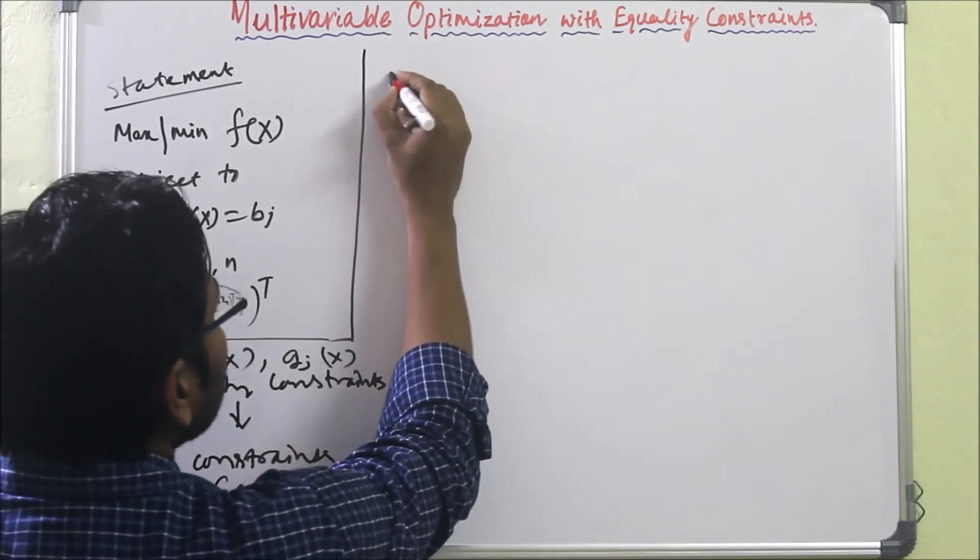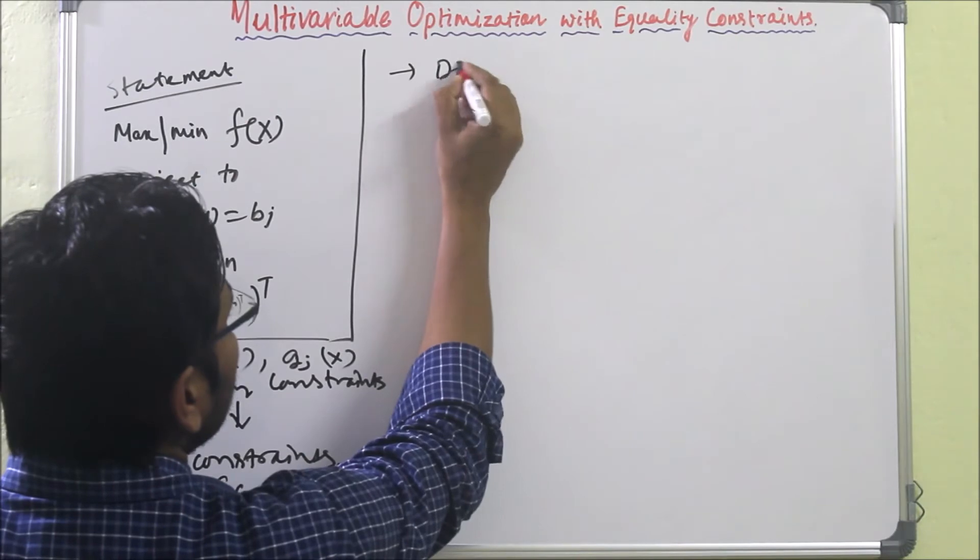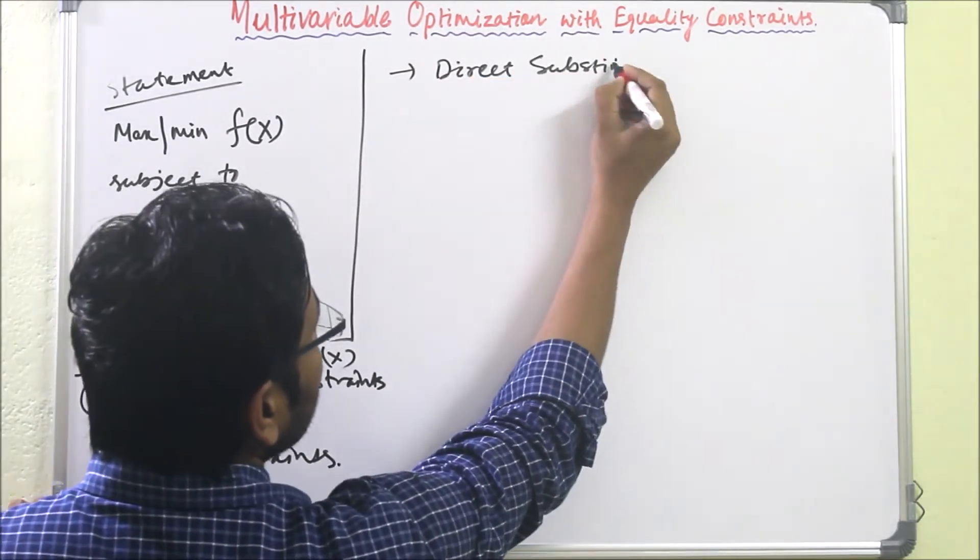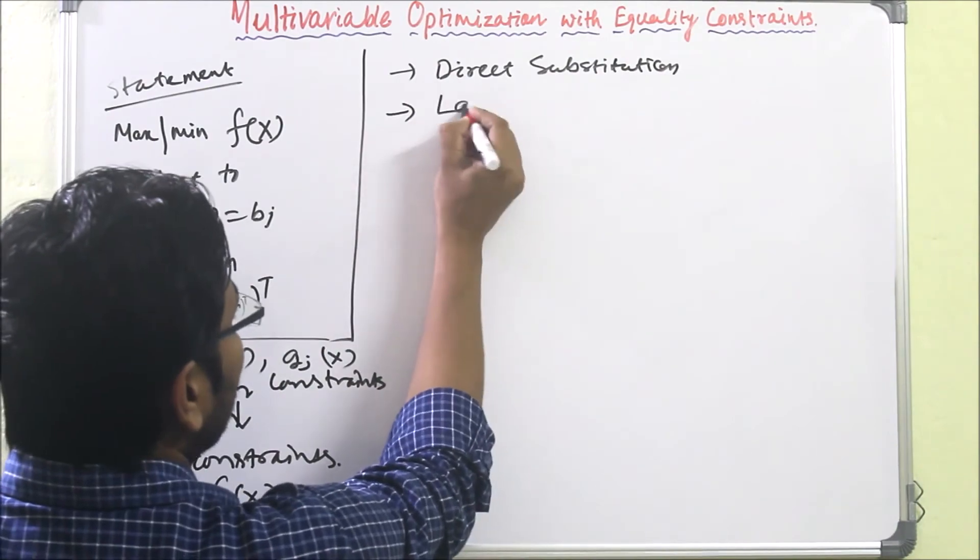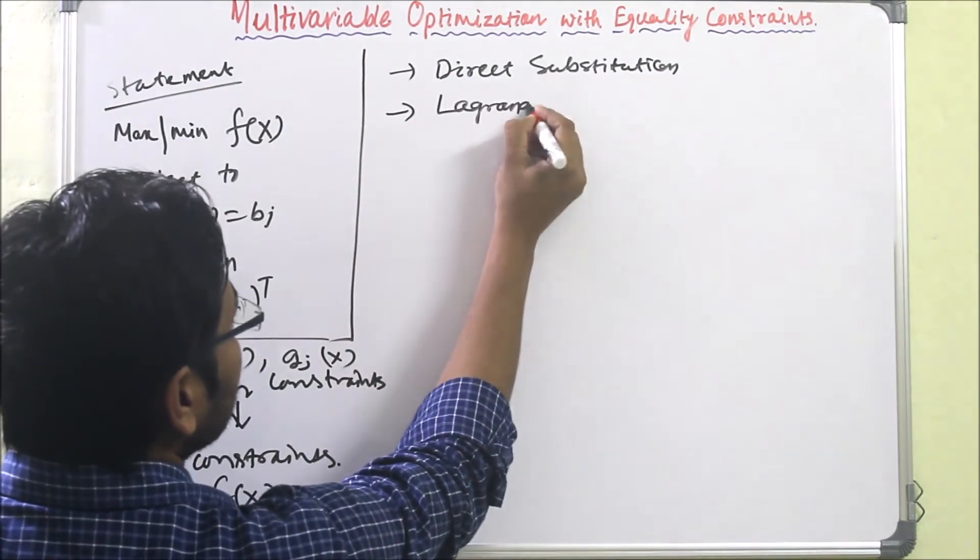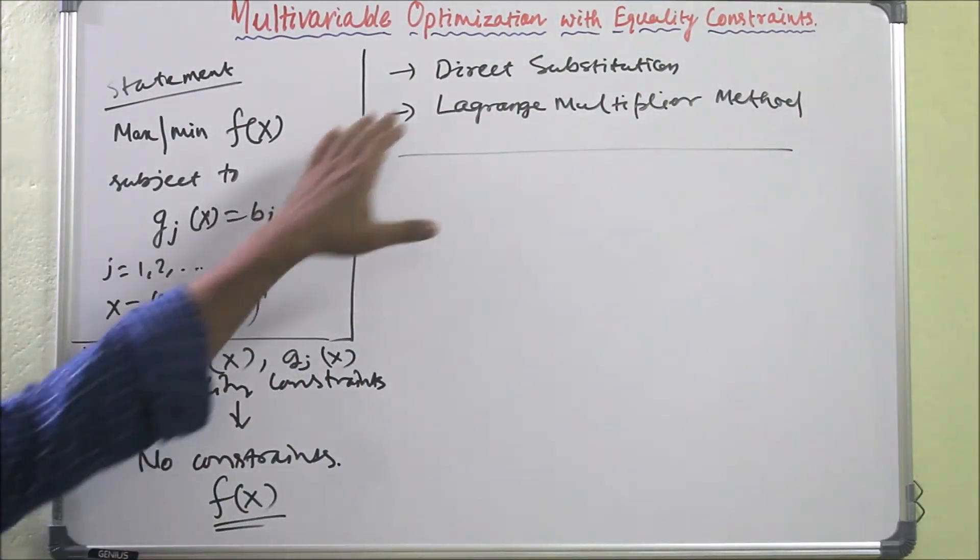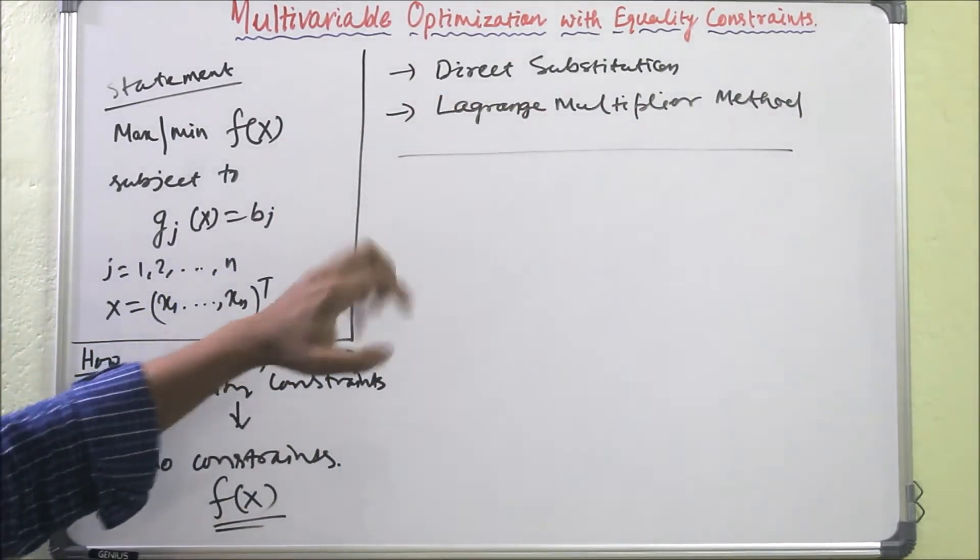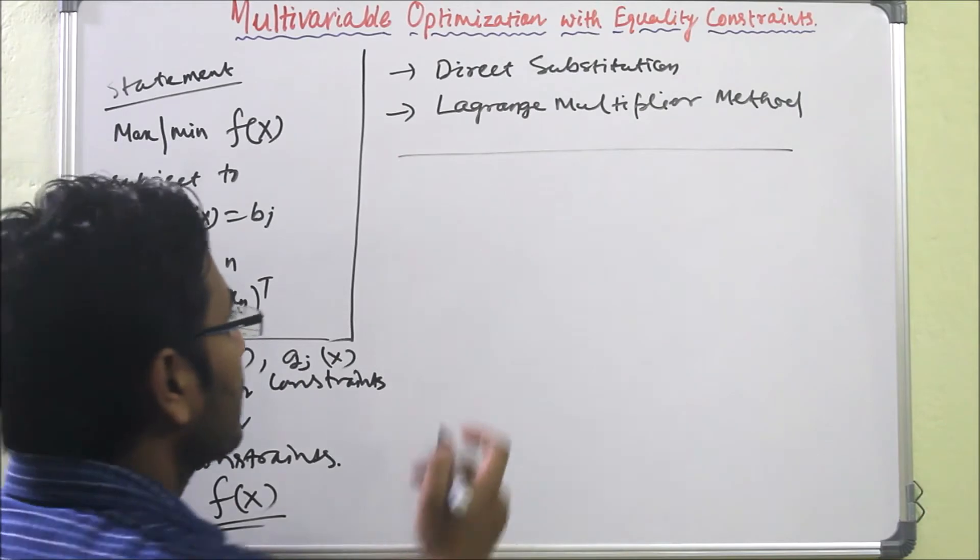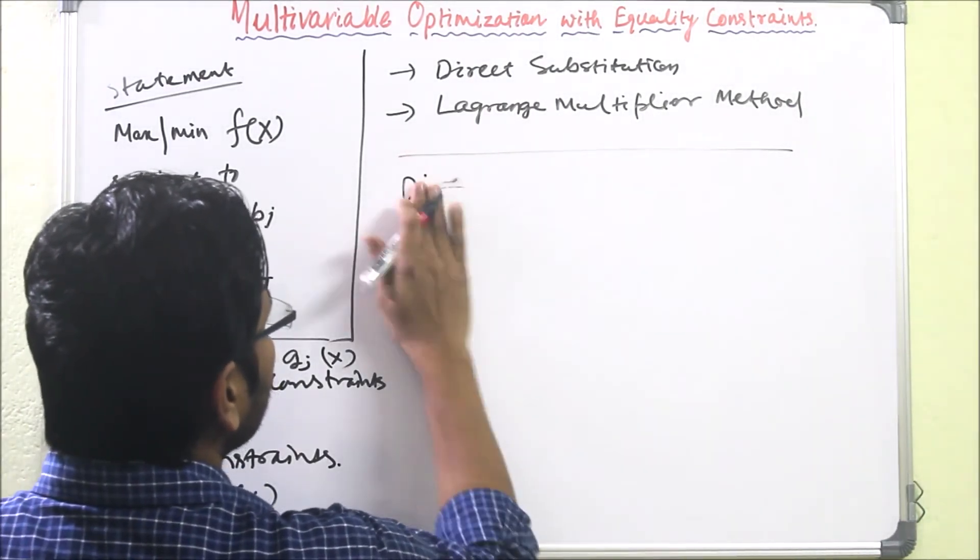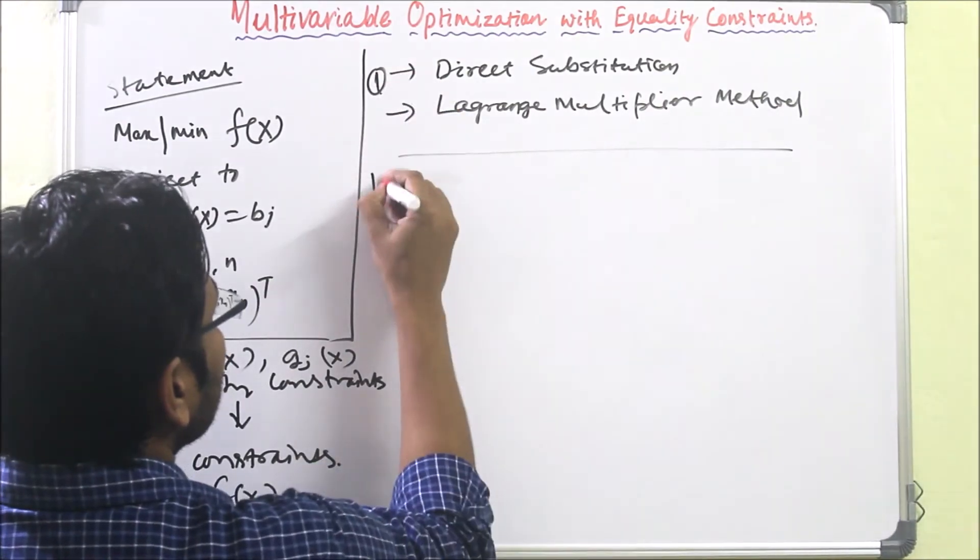There are two basic methods: first is direct substitution method, another is Lagrange multiplier method. So first we will discuss what is direct substitution method, then we will solve one problem.